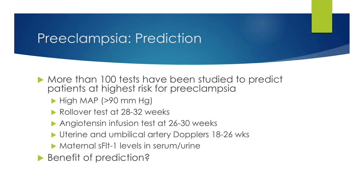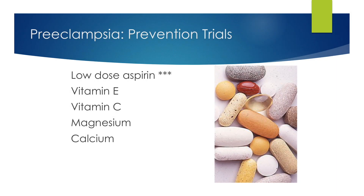There have been many tests designed to try to predict preeclampsia, but for the most part, all have failed. More than 100 tests have been studied, including a high mean arterial pressure, a rollover test at 28 to 32 weeks, an angiotensin infusion test at 26 to 30 weeks, measuring uterine and umbilical artery Dopplers at 18 to 26 weeks, and measuring maternal S-FLIT1 levels in serum and urine. None have been found beneficial. However, new research suggests that for women at risk for preeclampsia, low-dose aspirin may be beneficial in preventing subsequent preeclampsia in a pregnancy.